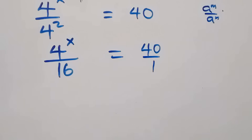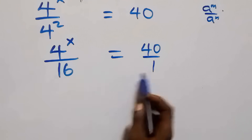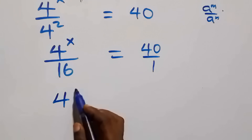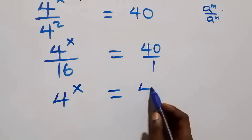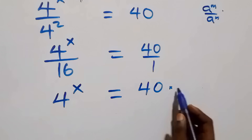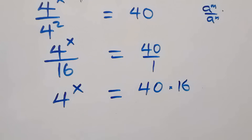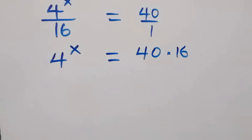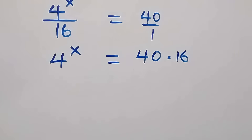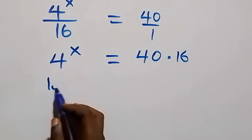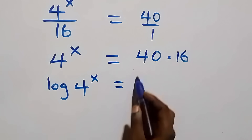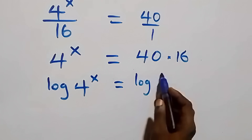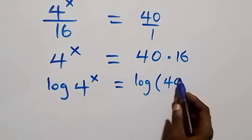The next step is to cross multiply. Then 4 raised to power x times 1 is still 4 raised to power x, and this equals 40 times 16. We then take the log on both sides: log of 4 raised to power x equals log of 40 times 16.